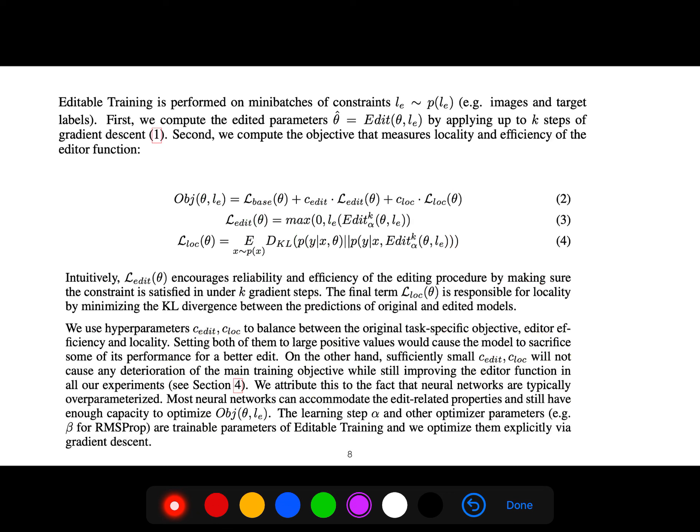Editable training is performed on mini-batches of this constraint, for example, images and target labels. First, we compute edited parameters by applying up to k steps of gradient descent. Second, we compute objectives that measure locality and efficiency of the editor function. And again, we have this KL divergence between these two probability measures. We have a locality measure and the edit and our base.